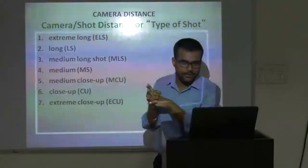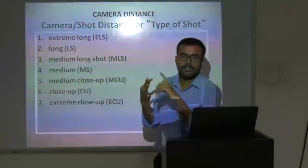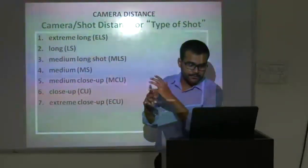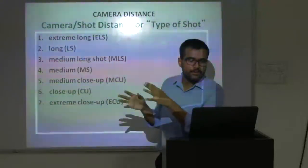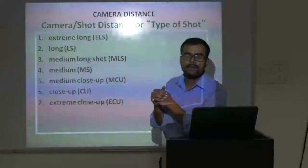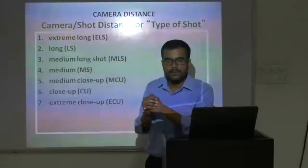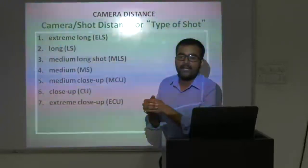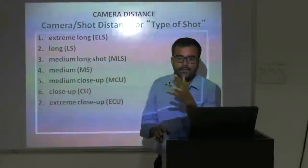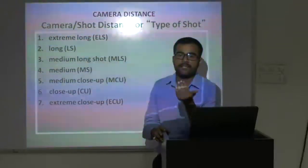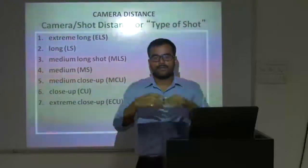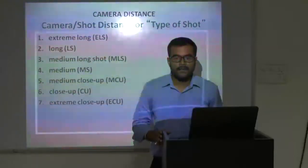Then we have different kinds of shots: extreme long shot, long shot, medium shots, close-up, medium close-up, close-up, and extreme close-up. There's one more shot — OSS. You know that shot? Over the shoulder. What is the use of that shot? It's basically to show that the person is talking to someone, usually for perspective reasons — it will indicate or show that we are talking to someone, we are not just talking blindly right into the camera, but to someone.